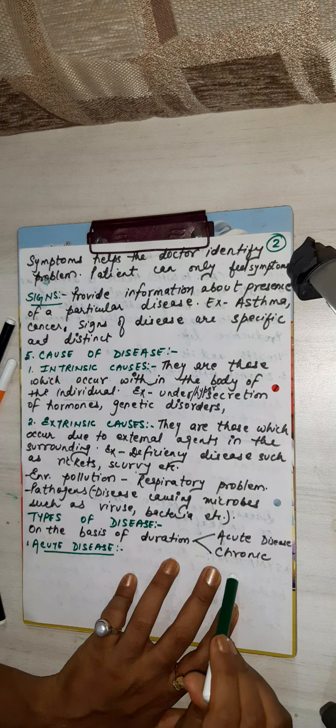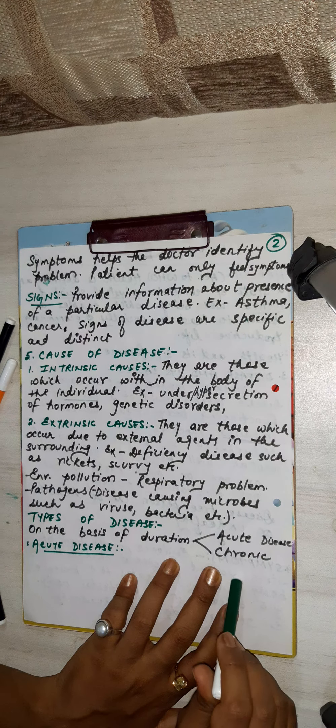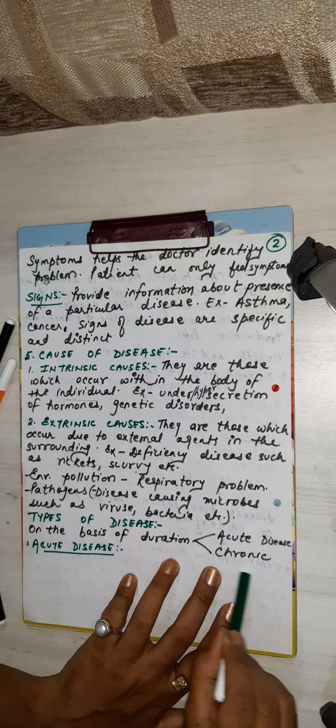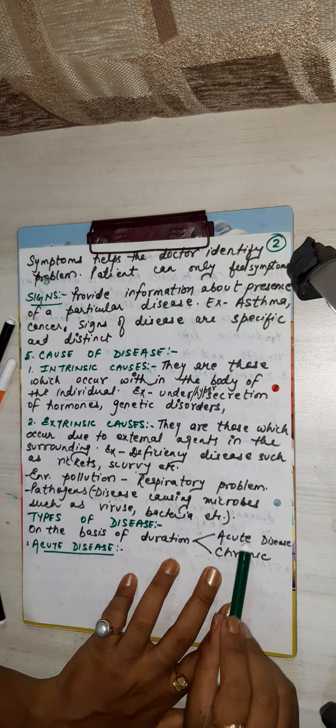So to summarize: TB, polio, hypertension, and diabetes are chronic diseases. And acute diseases include common cold, typhoid, and diarrhea.